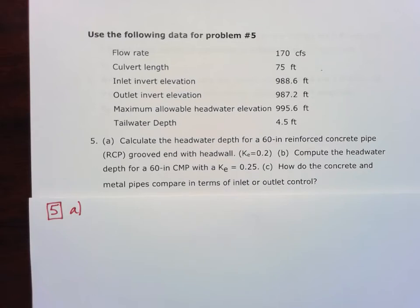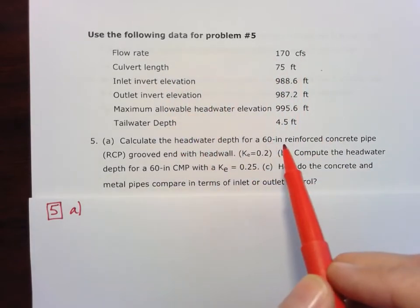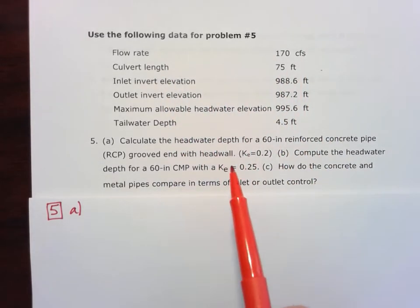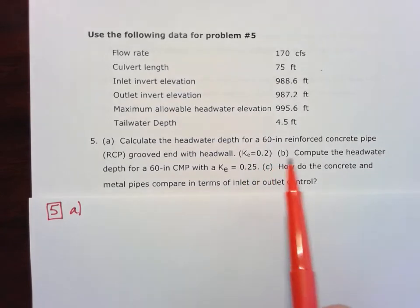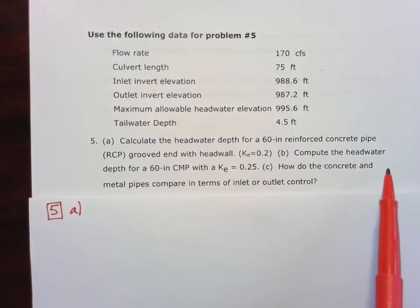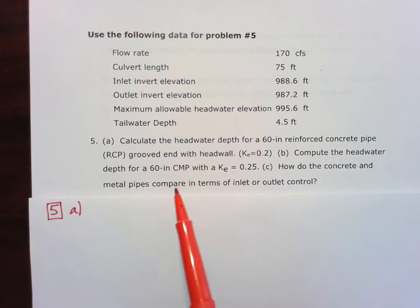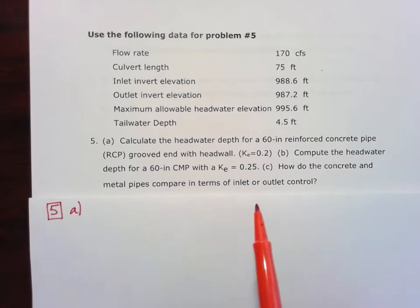Okay, continuing with the FE hydraulics homework for chapter five, we're going to do problem five here. We have this given information for our culvert, and we're going to find the headwater depth for a 60-inch reinforced concrete pipe with a grooved end and head wall. Then we're going to find the headwater depth for a 60-inch corrugated metal pipe, and then we're going to compare the concrete and metal pipes in terms of inlet and outlet control.